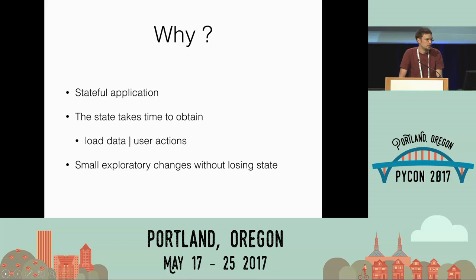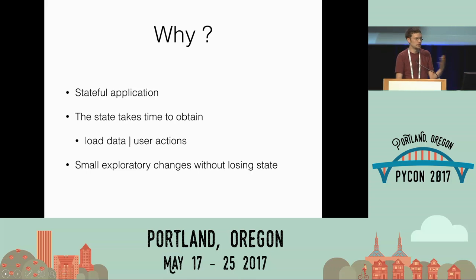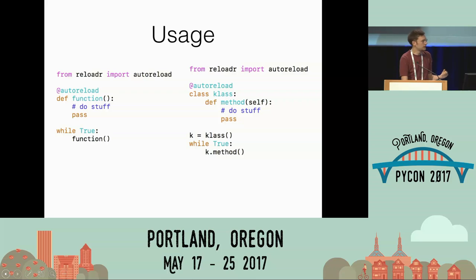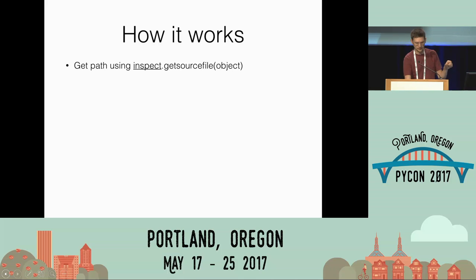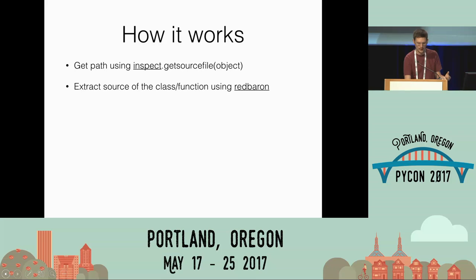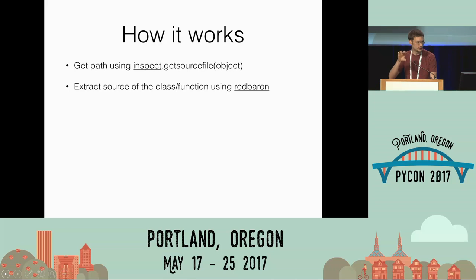You don't always want to do that. It's mainly useful when you have a stateful application where you want to maintain the state — if you took time to load data, to launch your app, if you're in a video game, want to customize dynamic behavior, or need many user interactions, then hot code reloading can be really useful. To use it, all you have to do is from reloader import auto_reload and decorate your function or class — it will just work. It uses inspect to get the path of the file where your function or class is defined, then uses a library called red barren to extract just that piece of code. So if you have a while loop below your class, it will still work.